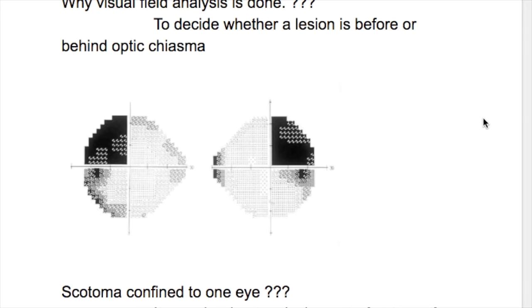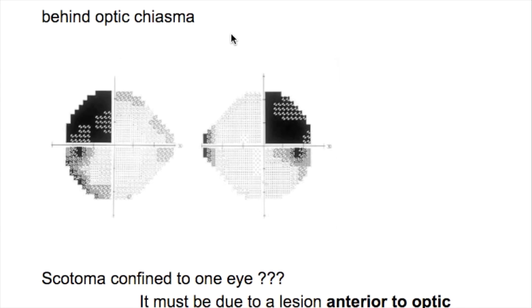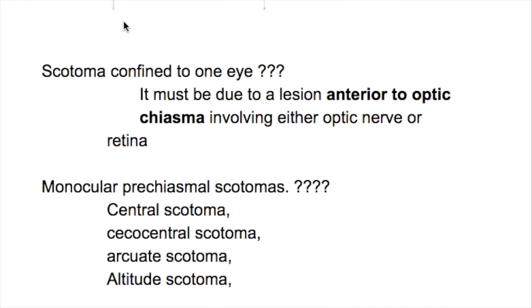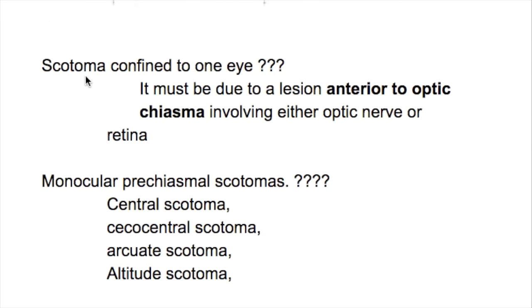In this video we'll discuss scotomas. Visual field analysis is done to decide whether a lesion is before or behind the optic chiasma.